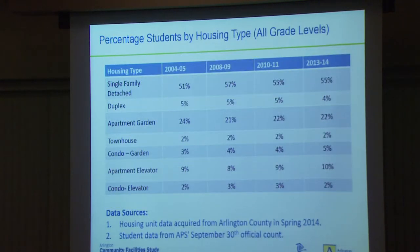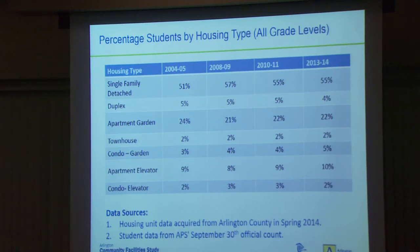Here's a chart of percent students by housing type — it hasn't changed much over time. In 2004, 51% of students came from single family detached homes; last year, about 55%.